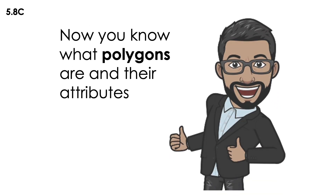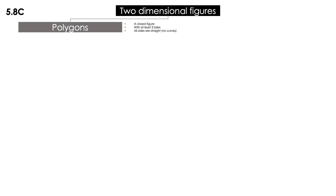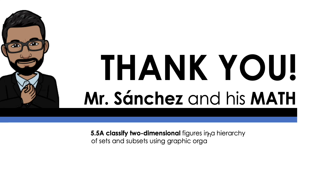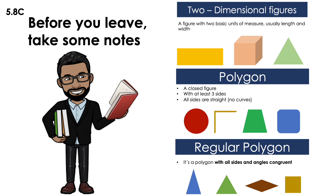So now you know what polygons are and their attributes. Using this diagram for two-dimensional figures: today we learned about polygons, which are closed figures with at least three sides and all sides straight. If they are not polygons, we call them non-polygons. Thank you very much. This was Mr. Sanchez and his math — classifying two-dimensional figures, specifically polygons and non-polygons. This was lesson two out of five. Remember, before you leave, take some notes. Have a good one.